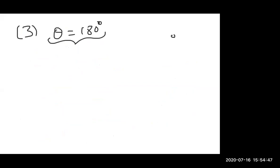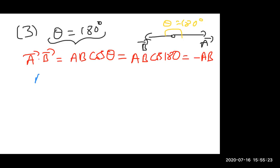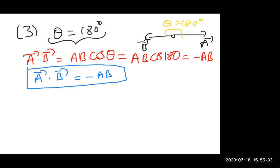Third property: if theta is 180 degrees, a bar and b bar are in opposite directions. Then a bar dot b bar equals AB cos 180, and cos 180 is minus 1. So the dot product is minus AB. When the two vectors are in opposite directions, the dot product is the product of their magnitudes with a negative sign.